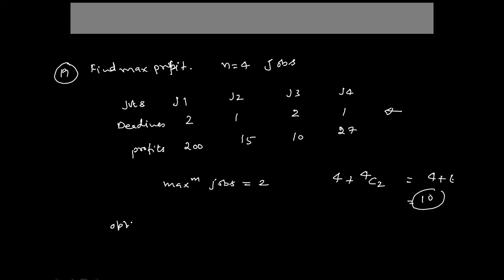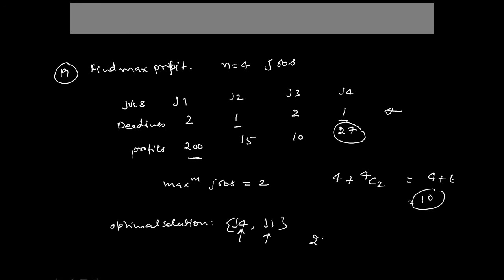For Problem 1, the optimal solution is J4 and J1. Jobs J4 and J2 must be completed in the first month; J4 has the higher profit so it is selected. In the second month, between J1 and J3, J1 has the higher profit so it is selected. The total maximum profit is 27 + 200 = 227.